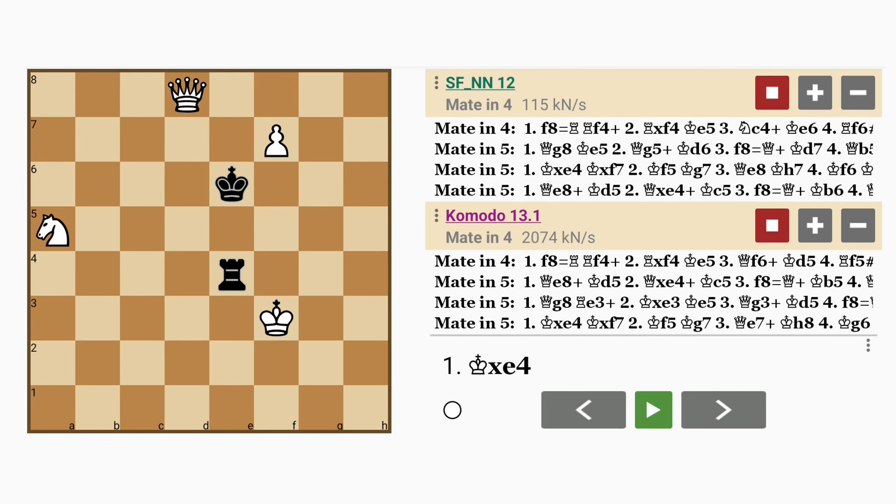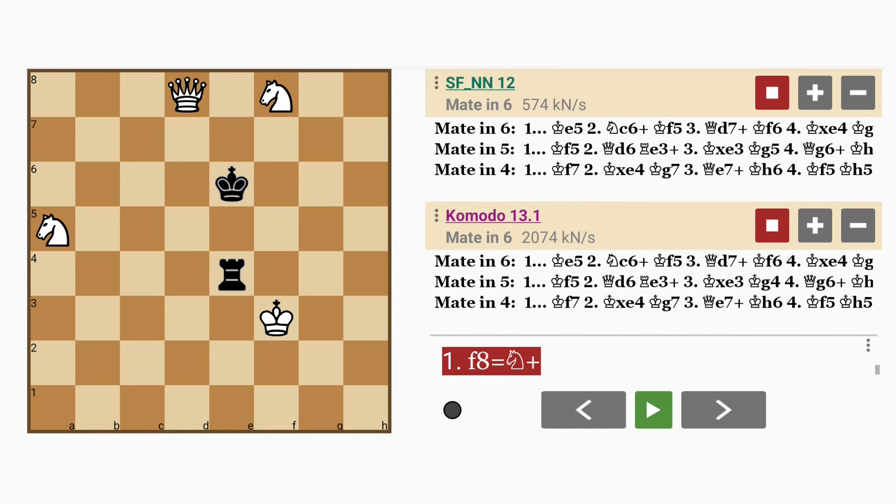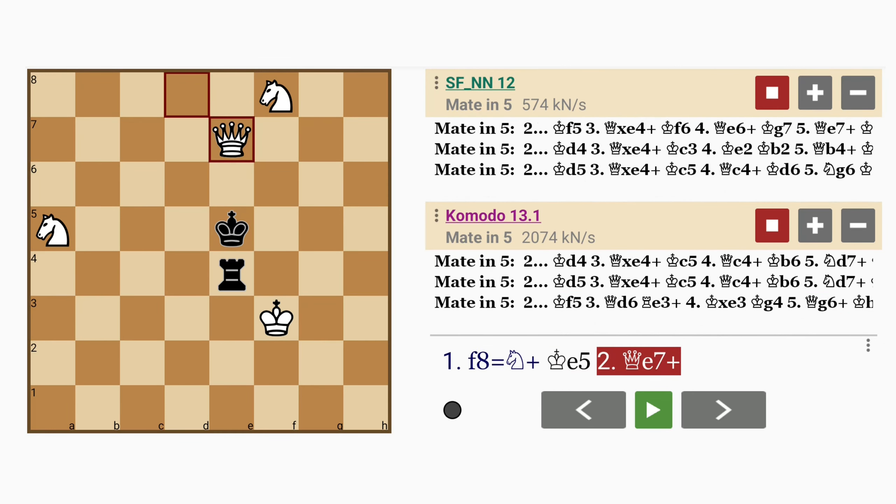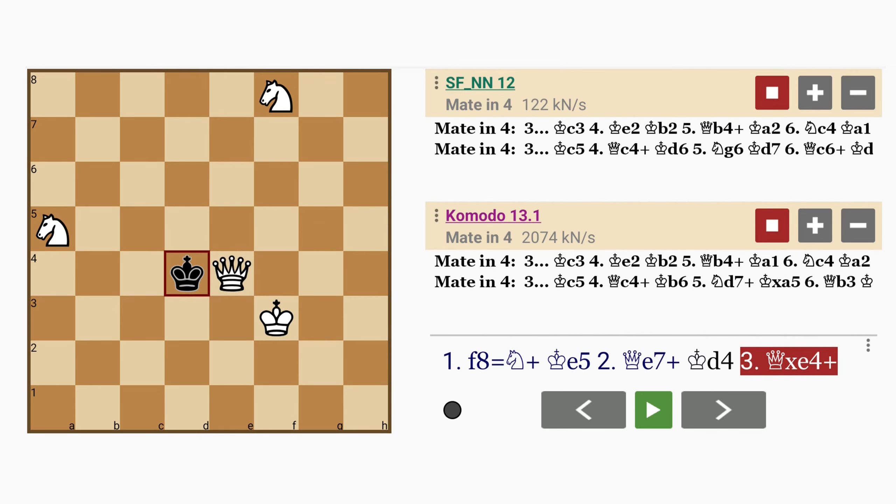Okay, why doesn't underpromotion to a knight with check work? Because of king to e5, defending the rook. And at this point, even if queen to e7 check, king to d4, queen captures rook check, king to c3.